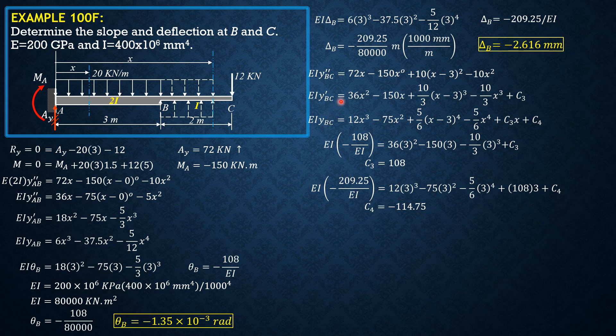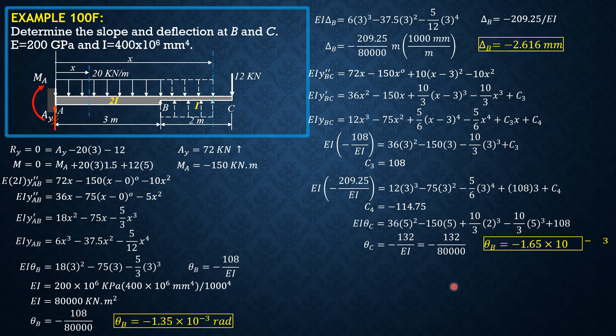So we can now compute theta C in this equation here because C sub 3 is found, 108. So EI theta C equals 36 times 5 squared minus 150 times 5 plus 10 thirds times 2 cubed minus 10 thirds times 5 cubed plus 108. So theta C is equal to negative 132 over EI, negative 132 over 80,000. So that would be equal to negative 1.65 times 10 to the negative 3 radians.